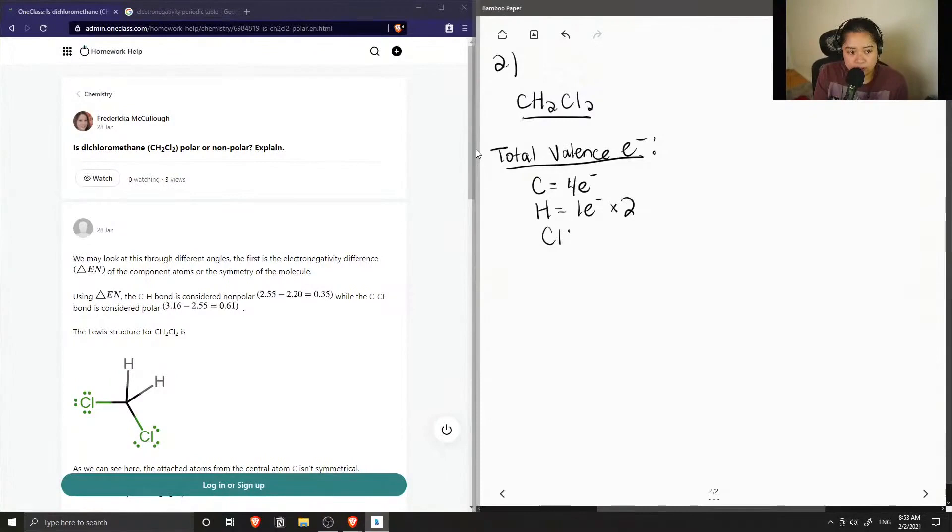And finally, chlorine has seven. And again, we multiply seven by two. And when we add these values up, we get a total of 20 valence electrons.